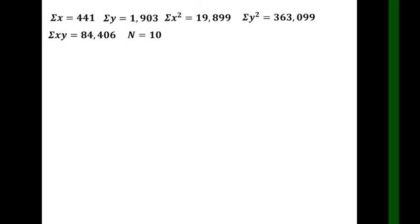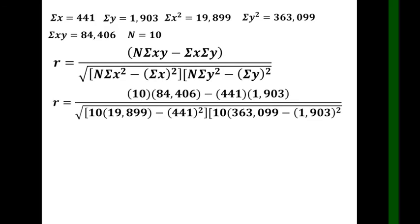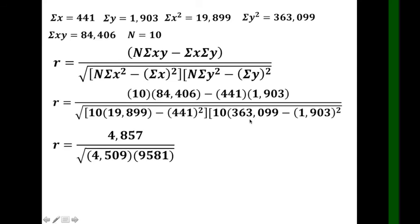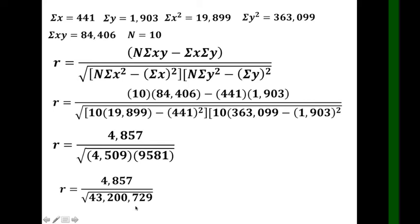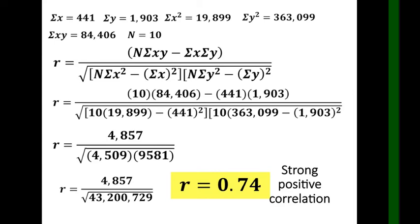Substituting the values into the Pearson r formula: the numerator gives 10 times 84406 minus 441 times 1903, which equals 4509. The denominator terms yield 4857 under the bracket. Dividing gives 4857 divided by the square root of 43279. The computed r equals 0.74, which rounded to two decimal places indicates a strong positive correlation.